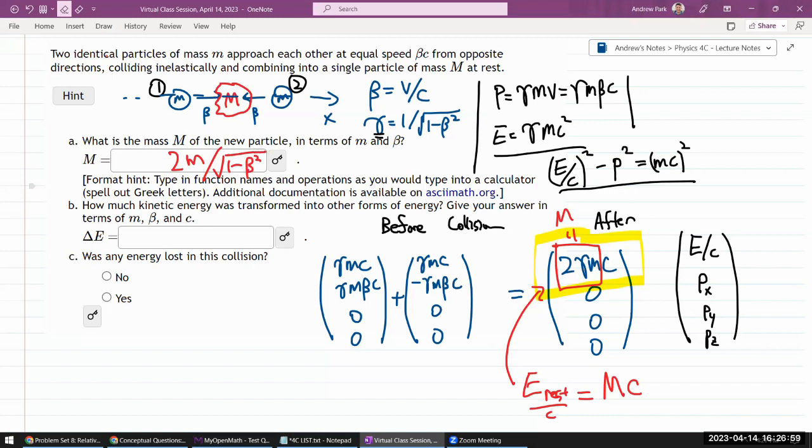So it would be 2M divided by square root of one minus beta squared. Yeah. And I'll enter it after. How much kinetic energy was transformed into other forms of energy?